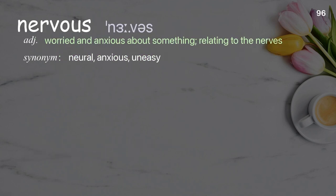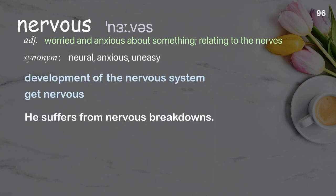Nervous: Worried and anxious about something; relating to the nerves. Examples: Development of the nervous system, Get nervous. He suffers from nervous breakdowns.